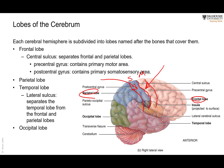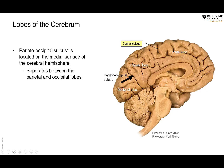There is another sulcus called the lateral sulcus, which separates the temporal lobe from the frontal lobe. Posteriorly we have the occipital lobe. The separation between the occipital and parietal lobe is not clear on the lateral surface of the brain, but on the medial surface there is a very clear sulcus between them called the parieto-occipital sulcus — that is how we differentiate between these two lobes.